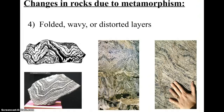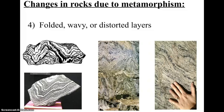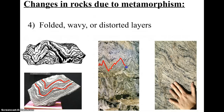The last change we see in metamorphic rocks has to do with pressure — it's common to see folded, wavy, or distorted layers. When you're driving around Westchester and look at the rocks on the side of the road, you'll often see these wavy bands, which tell you the rocks were under a lot of pressure and are metamorphic rocks. Sometimes if there's really a lot of pressure, we have intense distortion — very, very wavy layers. Tomorrow, we're going to take a look at some metamorphic rocks, explore them a bit, and learn more about how they form.